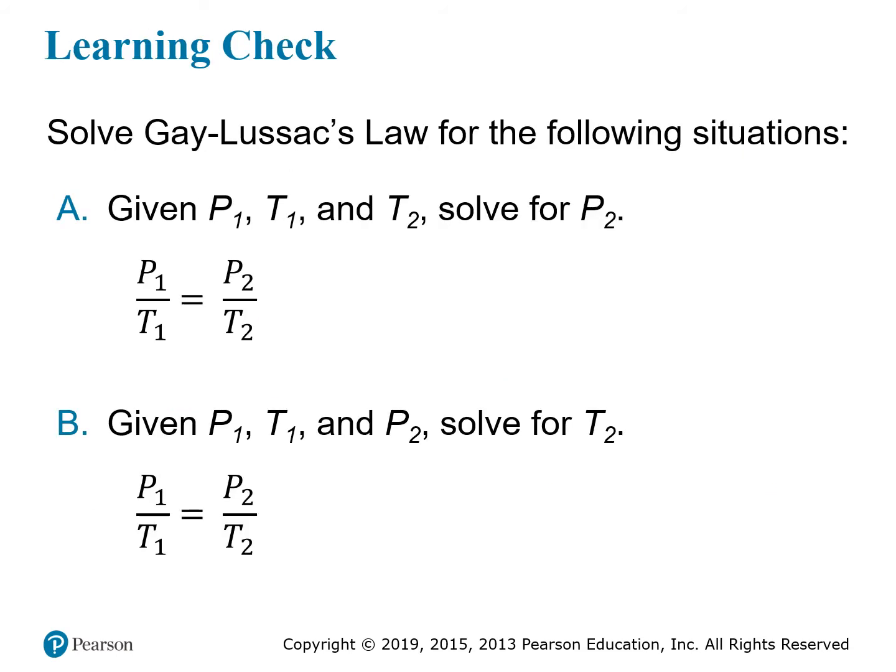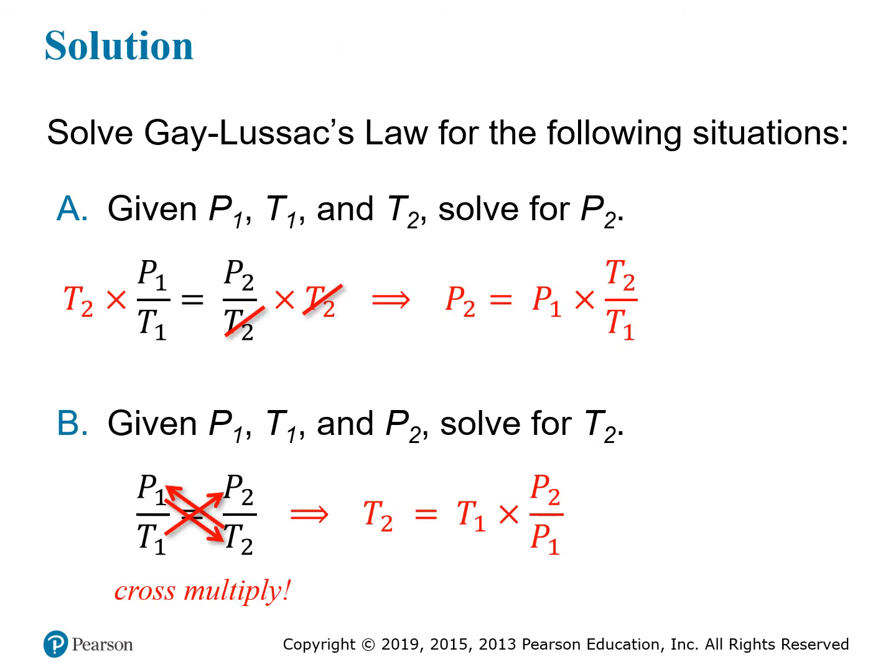Just like with Charles's Law, there are two basic question types. You're generally given the initial pressure and temperature, and then either the final temperature — in which case you solve for the new pressure — or you're given the new pressure and asked to solve for the new temperature. The algebra here is identical to Charles's Law, just with pressure substituted for volume.